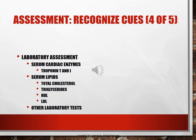Homocysteine is produced when proteins are broken down; elevated levels in the blood indicate risk for cardiovascular disease. C-reactive protein (CRP) is an inflammation marker that helps manage statin therapy in adults at risk for cardiac disease, particularly after an MI. We want CRP to be less than one milligram — elevation indicates tissue infarction or damage.